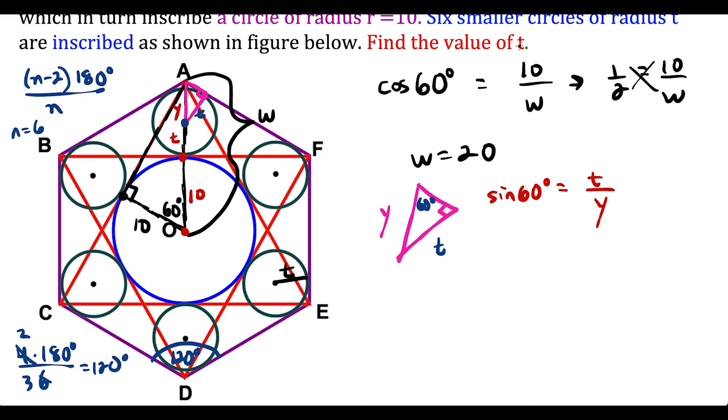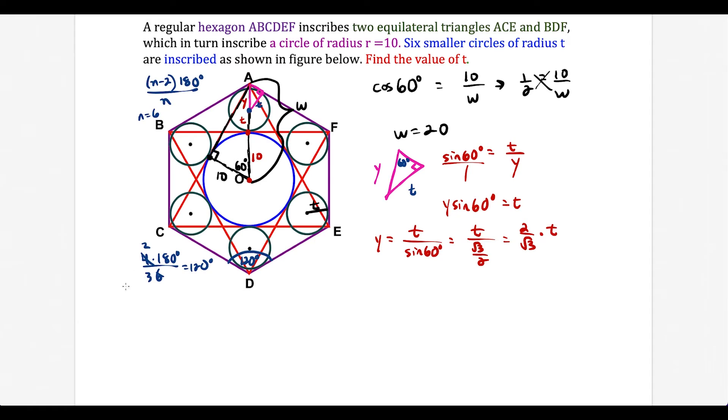And since our ultimate goal is to find the value of t, I'm going to solve this equation so that it's all in terms of t. So I'm going to solve this for y. We could cross multiply. We're going to have y times sine of 60 is equal to t. Then we're going to divide by sine of 60. So we have y equals t divided by sine of 60. And now just substitute, we have t divided by radical three over two. If we use keep change flip or just take the reciprocal, this is going to be 2 over radical 3 times t.